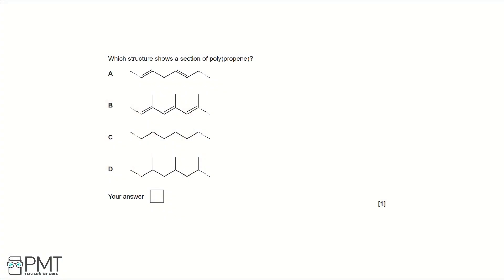Which structure shows a section of polypropene? We're shown four different structures. If we draw a repeating unit of polypropene, that's going to be the carbon-carbon double bond with the CH3 or the methyl group, hydrogen, hydrogen, and hydrogen.